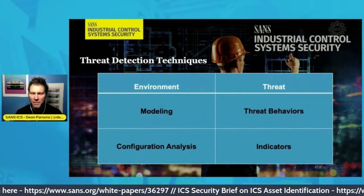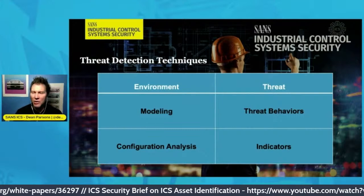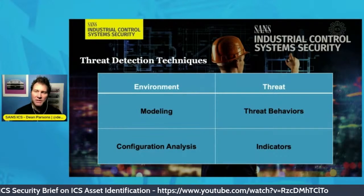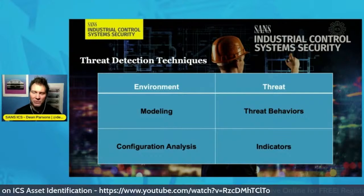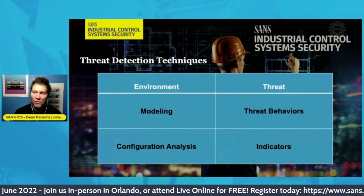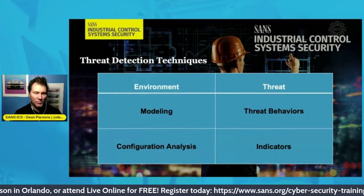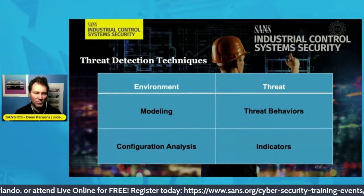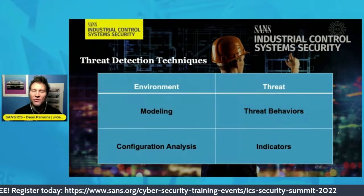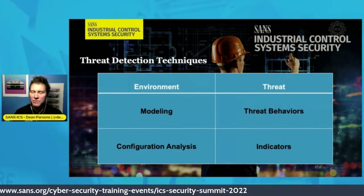To reduce false positives, moving away from configuration analysis, we can deploy modeling in the environment, which means we can allow some changes over a period of time. For example, we can allow project files to be uploaded and changed in the PLC over X number of times and N number of days, reducing the false positives. You may have to tune it, but again, detecting changes at the lower level of the control system.